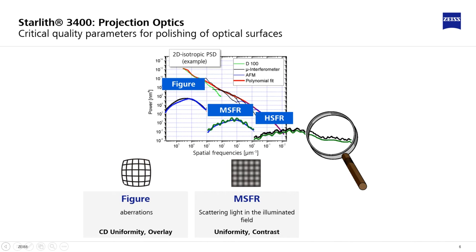MSFR is measured by micro interferometers. Bad MSFR leads to light that is scattered into the illuminated field, which leads to bad uniformity and bad contrast for the system performance.